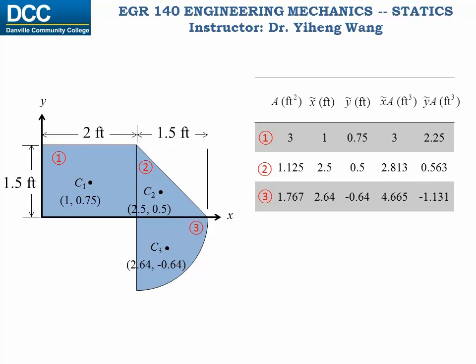It is easier to use a table. For each component area, fill in their respective area, the x coordinate of their centroid x-tilde, the y coordinate of their centroid y-tilde. Again, please make sure that they are with respect to the same coordinate system. And then fill in x-tilde times its area, and y-tilde times its area for each of the component areas.